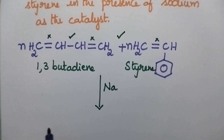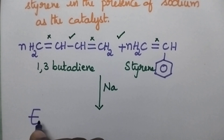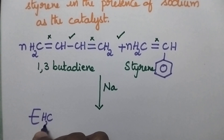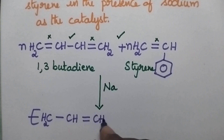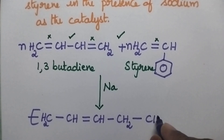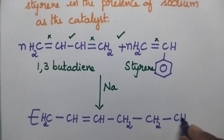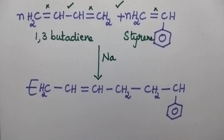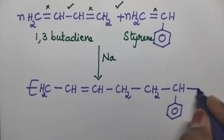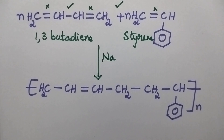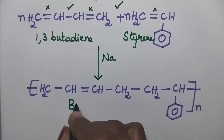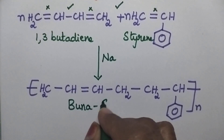Coming to the structure of Buna S rubber, it can be represented as: -CH2-CH=CH-CH2-CH2-CH(benzene nucleus)-. The same repeating unit continues N number of times, and this polymer is called Buna S rubber.